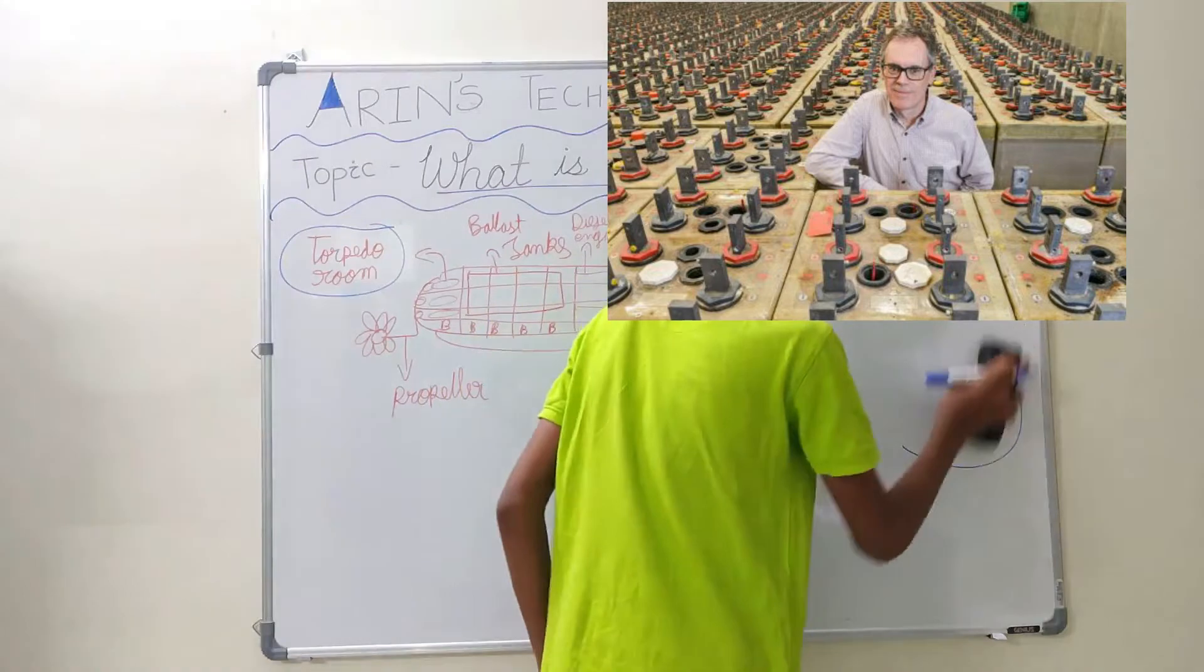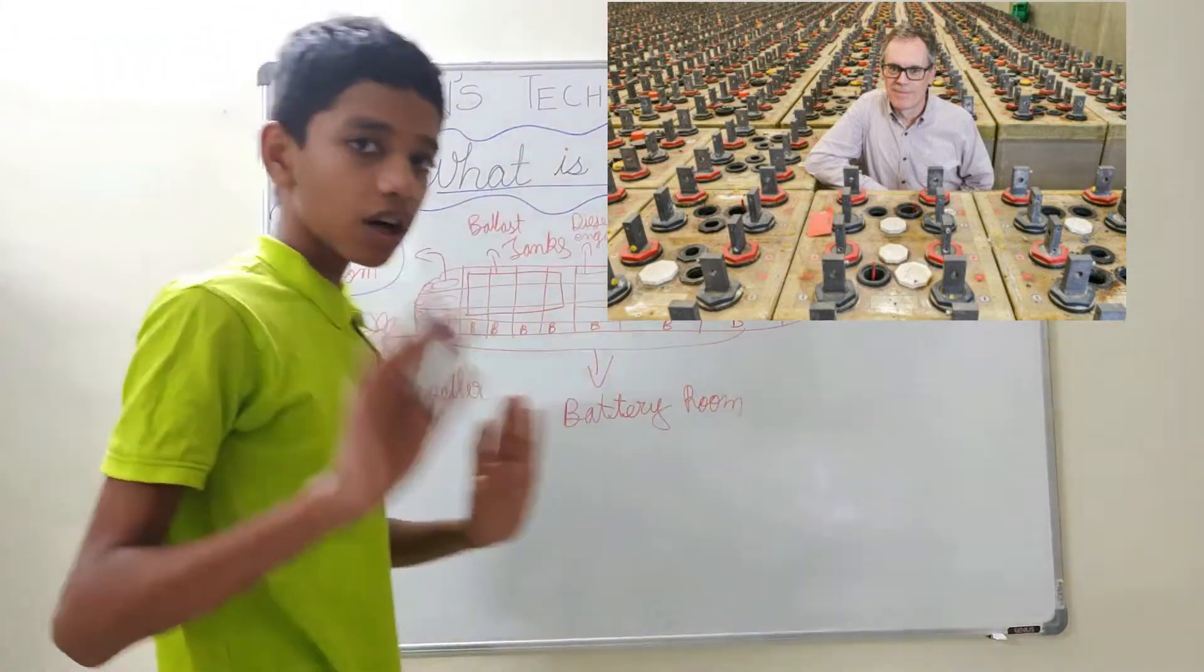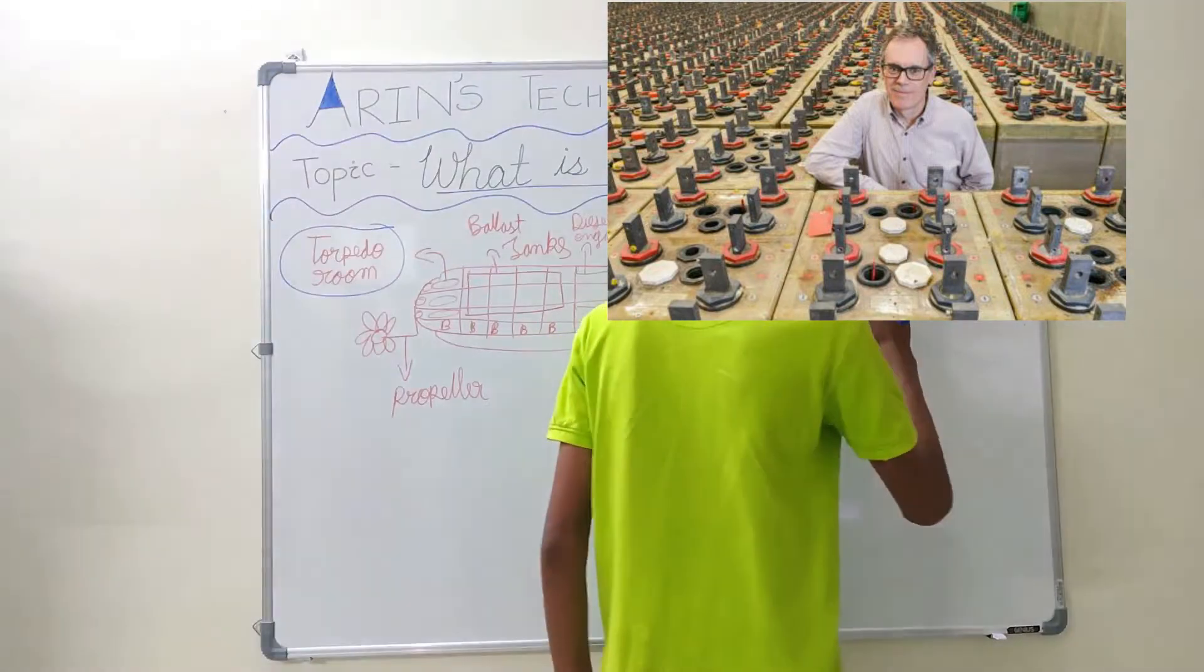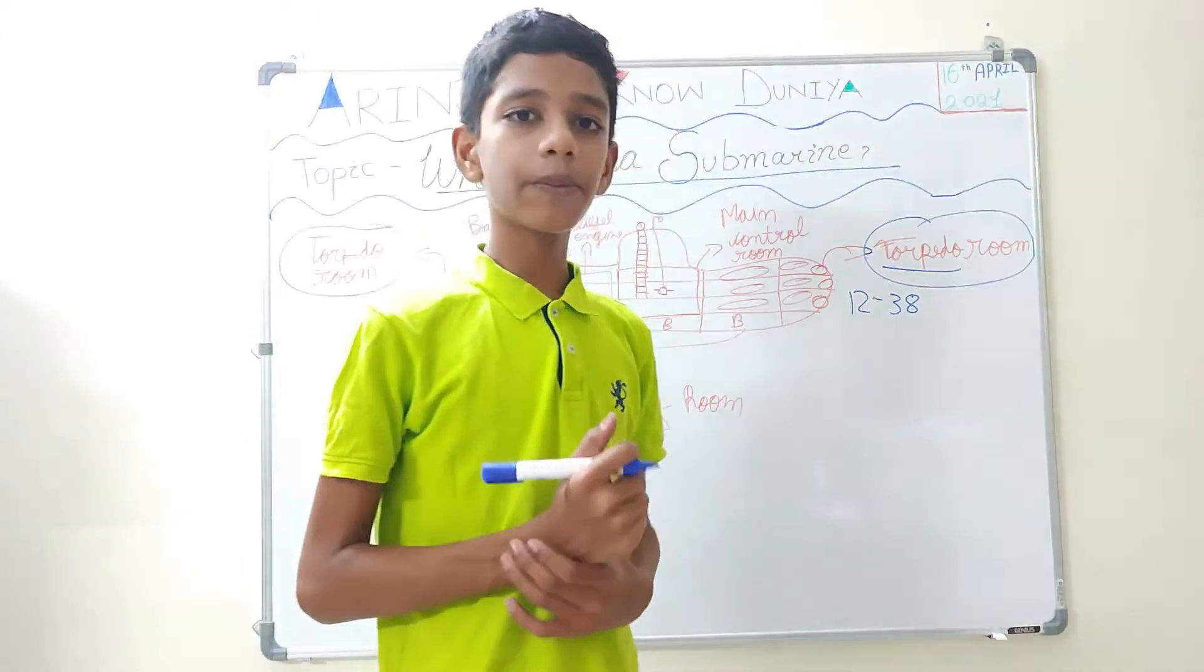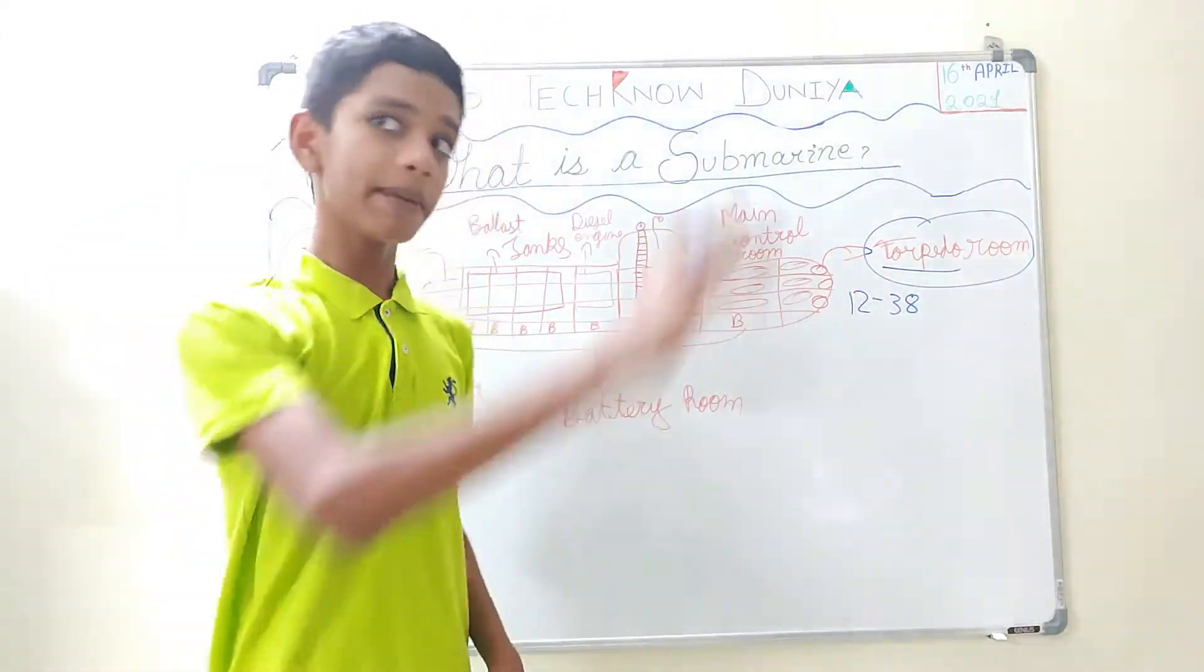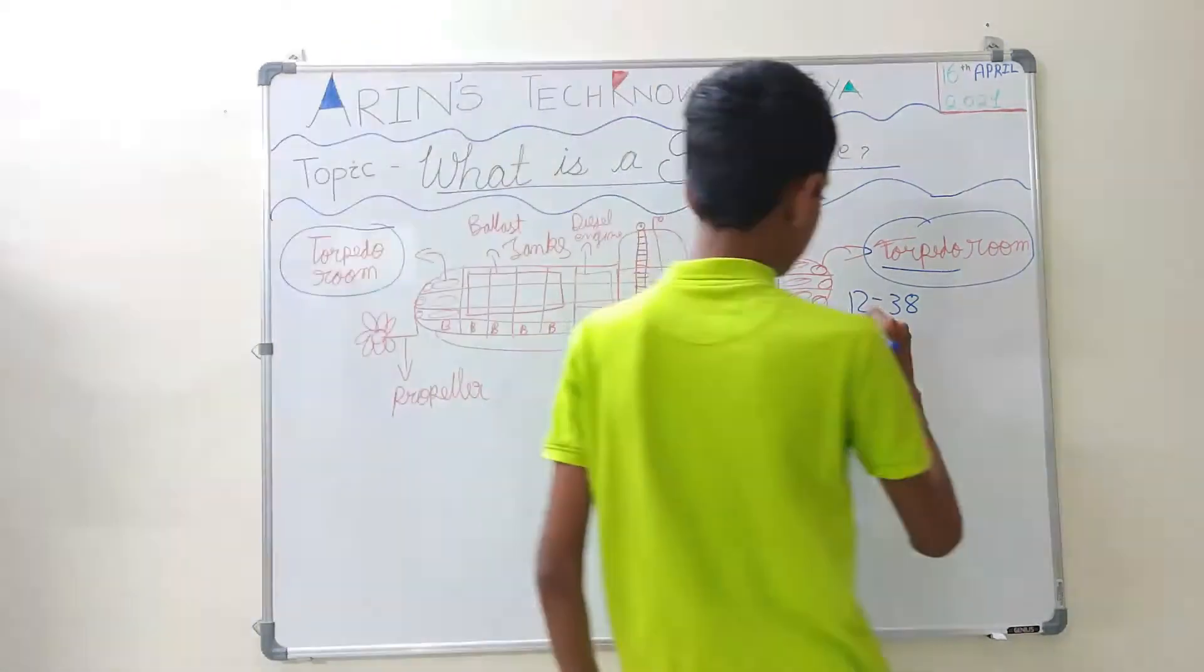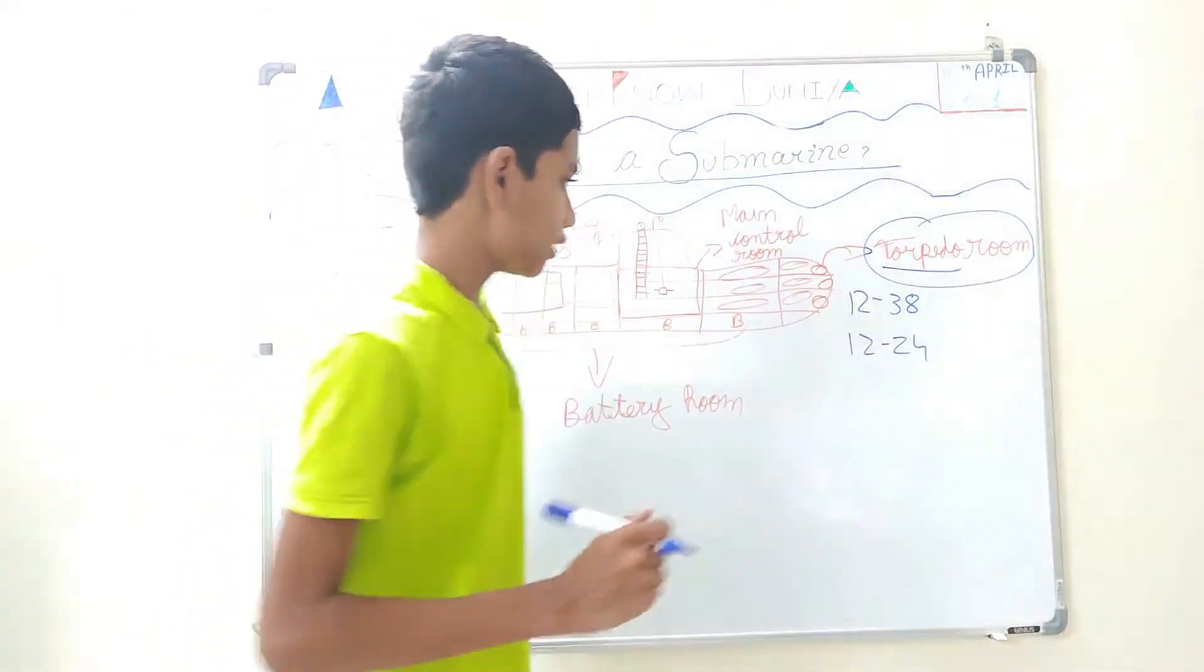If it is a normal torpedo submarine, it can carry 12 to 38 torpedoes. And if it is a ballistic missile submarine, which can even fire missiles with torpedoes, they can carry 12 to 24 torpedoes because they need to carry missiles too.